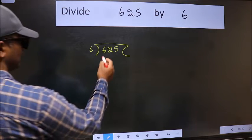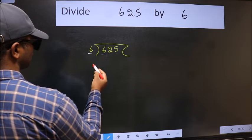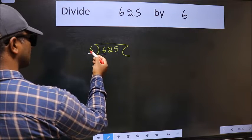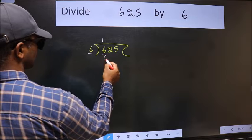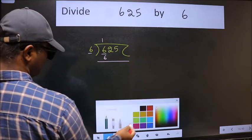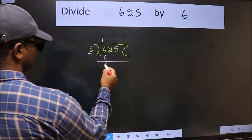Next, here we have 6 and here also 6. When do we get 6 in the 6 table? 6 times 1 is 6. Now we should subtract. We get 0.